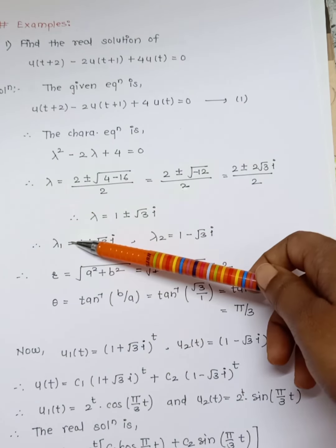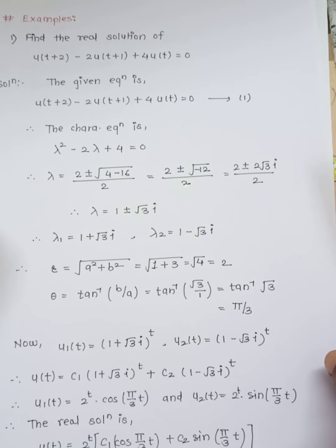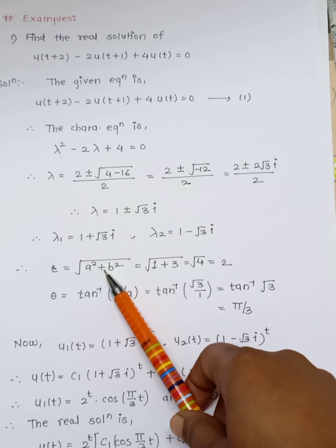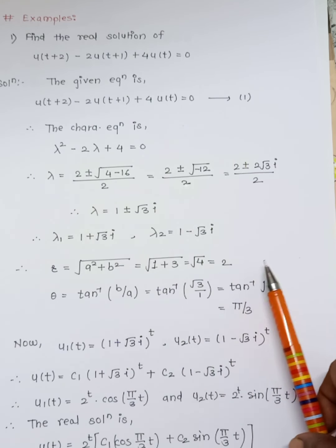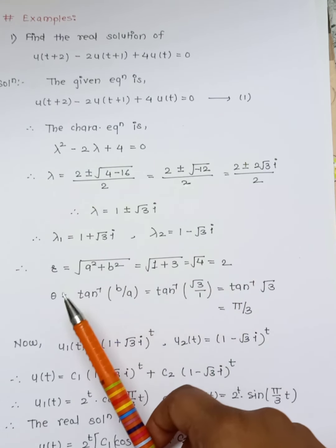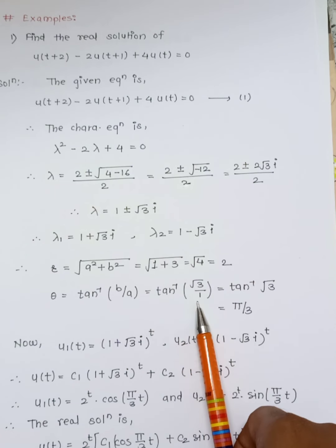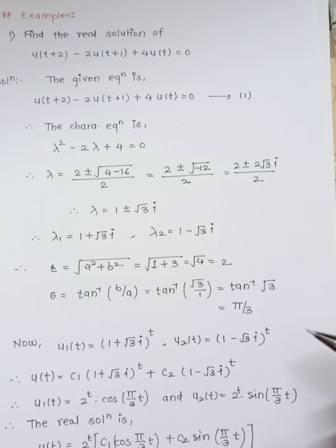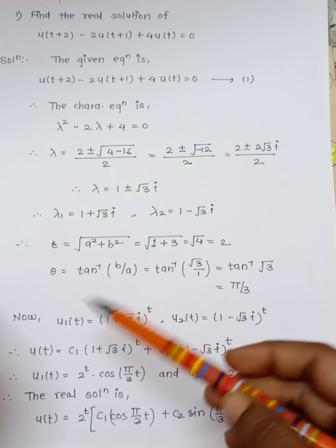So λ = 1 ± √3·i. Thus λ₁ = 1 + √3·i and λ₂ = 1 - √3·i. We need to write these in polar form. The modulus r = √(a² + b²) = √(1 + 3) = √4 = 2. The argument θ = tan⁻¹(b/a) = tan⁻¹(√3/1) = tan⁻¹(√3) = π/3, which is 60°.